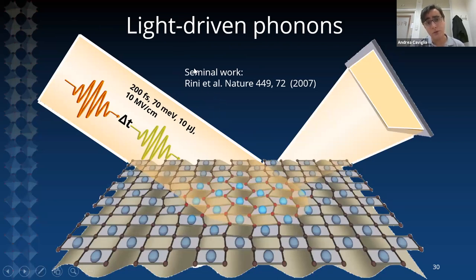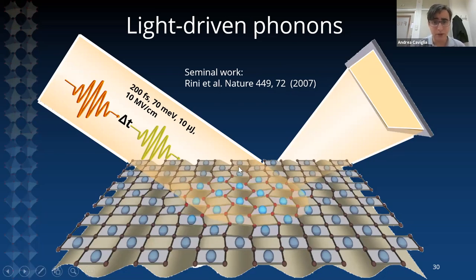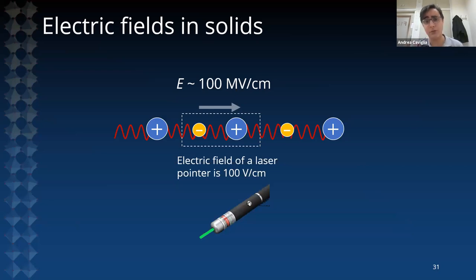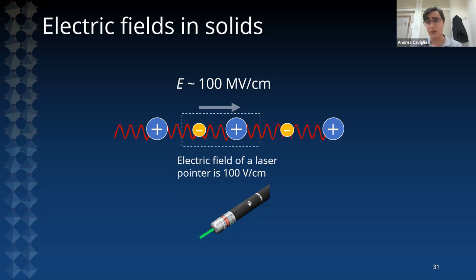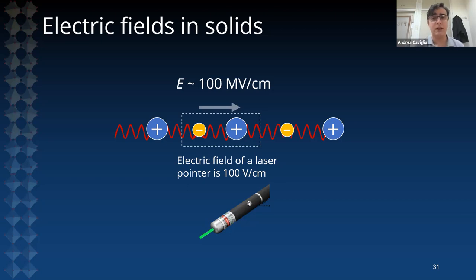Driving phonons with light is something pioneered by the group of Andrea Cavalleri since 2007. The first seminal work was an insulator-to-metal phase transition obtained in manganite systems, whereby by exciting a manganese-oxygen stretching mode they induced the insurgence of a metallic state on ultrafast timescales. To give an idea of the type of light needed: the equilibrium interatomic electric fields in solids are of the order of 100 MV/cm, while the electric field of a laser pointer is about 100 V/cm — not nearly strong enough to produce significant atomic displacements.